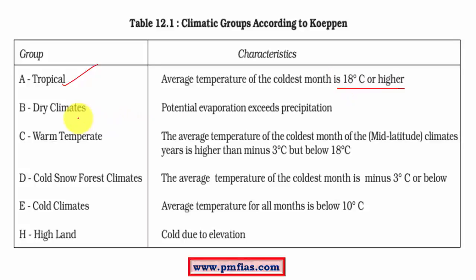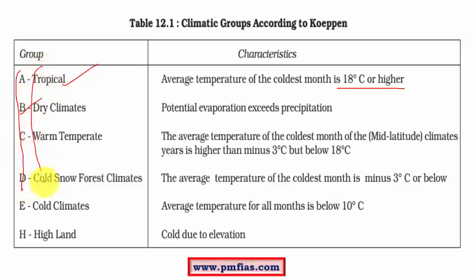Dry climates are represented by the alphabet B. The alphabetic representation is meant to make the concept simple. If you find the alphabetic scheme tough, just don't worry about it and remember the basic terms associated with various climatic regions instead.